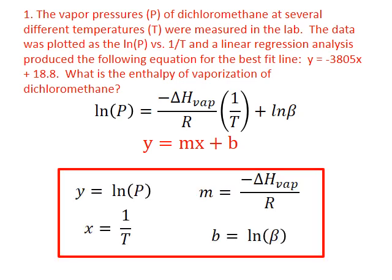In this form, y is equivalent to the natural log of the vapor pressure, x is equal to the inverse of the temperature, the slope is equal to the negative of the enthalpy of vaporization divided by R, the ideal gas constant, and b equals the natural log of beta.